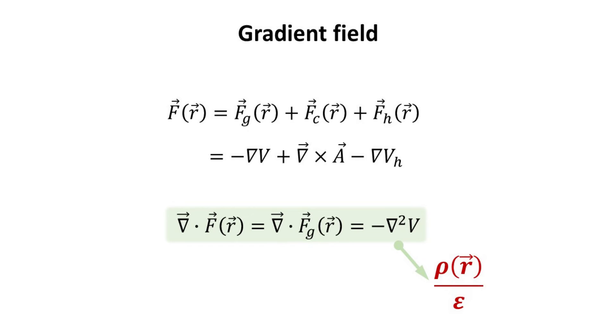If we are dealing with electrostatics, then this source term equals the charge density divided by the permittivity. Now can we work out the gradient field from this source term?